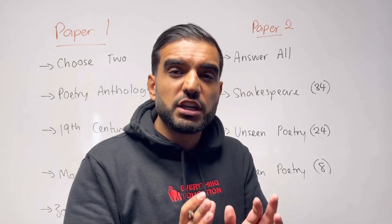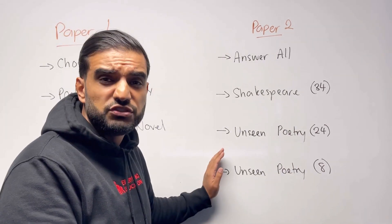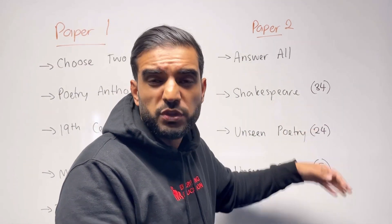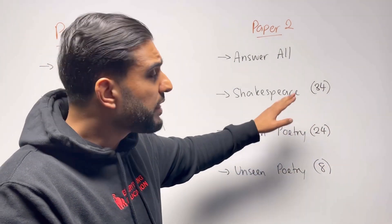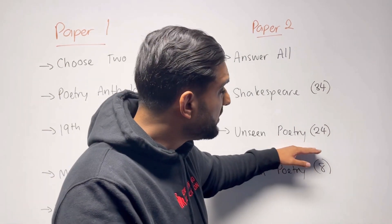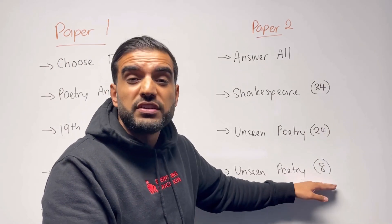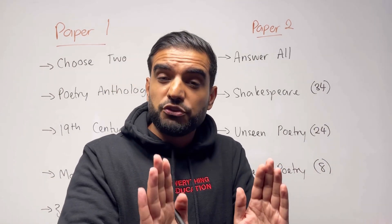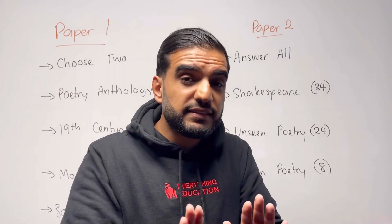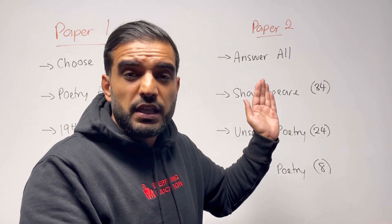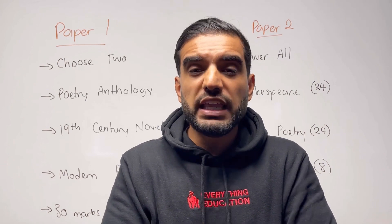For Paper 2, there is no choice — everyone across the country must do these three. First, everyone must do Shakespeare, whether that's Macbeth or Romeo and Juliet. Second, everyone must do the unseen poetry questions. The first unseen poetry question gives you one unseen poem and asks you a question about it. The second unseen poetry question, which is an eight-mark question, gives you a second unseen poem and may ask you to compare the similarities or differences between the two. This exam marks you for SPAG, so Paper 2 covers AO1, AO2, some AO3 for Shakespeare, and AO4.